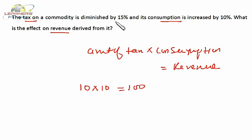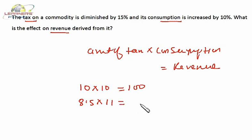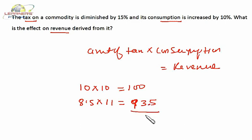Tax is diminished by 15 percent, that means the new tax is 8.5. The consumption is increased by 10 percent, that means the new consumption is 11. Now we have to see the net impact: 11 into 8.5 is 93.5. So there is a decrease.